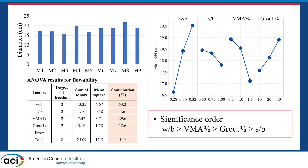Here are the results of the flow table test. As the water-to-binder ratio and grout replacement level increased, flowability also increased. However, when the sand-to-binder ratio and VMA increased, flowability decreased. As shown in the ANOVA table, the water-to-binder ratio was the most significant factor affecting flowability among all factors.